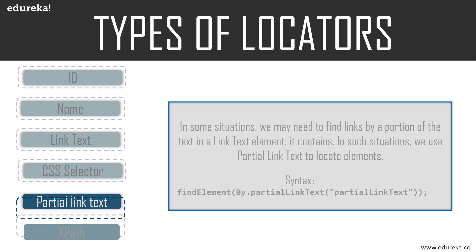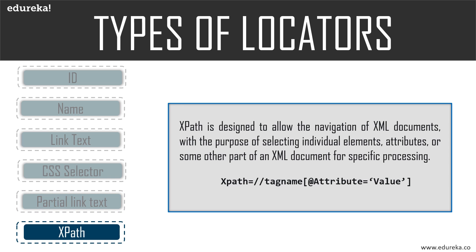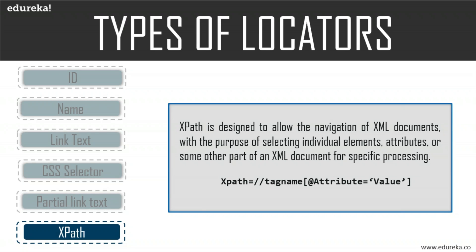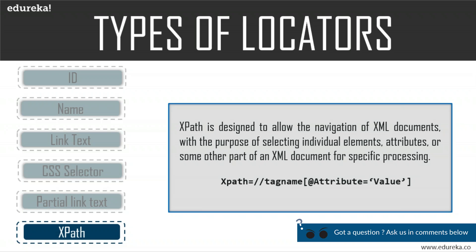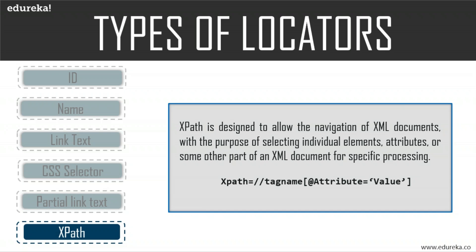Let's move on to another important element locator: XPath. XPath is a standard navigation tool for XML, and since an HTML document is also an XML document (XHTML), XPath is used wherever there is XML. It is designed to allow navigation of XML documents to select individual elements, attributes, or other parts. The syntax always starts with two consecutive slashes followed by the tag name and square brackets where you specify the attribute, the select function, and the attribute value.